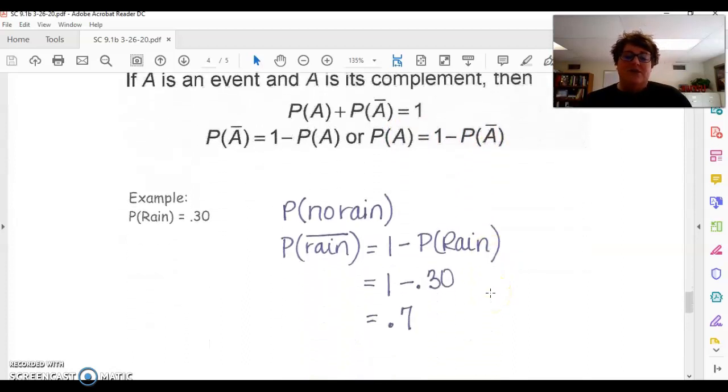So an example, the probability that it's going to rain is 0.30. So the probability of no rain, so that means rain with a line over it. The line is the complement, is 1 minus the probability of rain. So 1 minus 0.30, which gives me 0.7. So if I add up together the probability of rain and the probability of not rain, you should get 1.